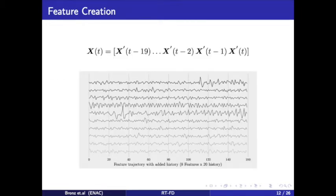SVMs assume all features are centered around zero with variance in the same order. To prevent any single attribute from dominating, we standardize features by removing the mean and scaling to unit variance. The figure shows a set of feature trajectories — starting from the top in dark black as the newest trajectory, going down to light gray for older ones. Each trajectory has 160 points, and the objective is to classify these trajectories.